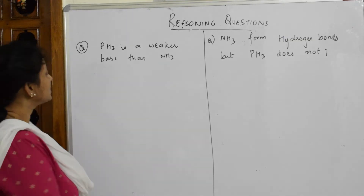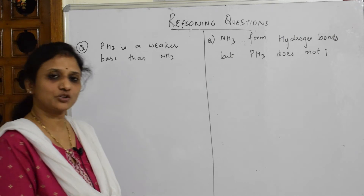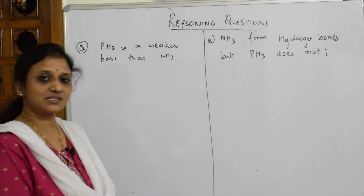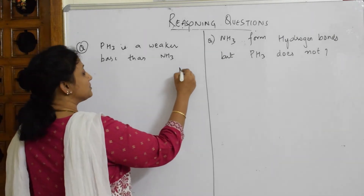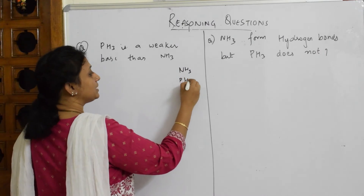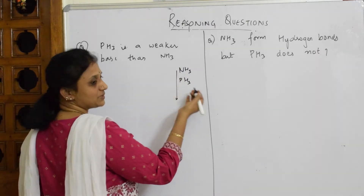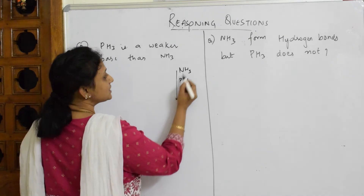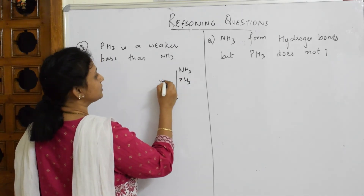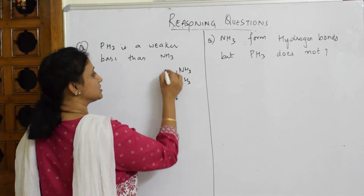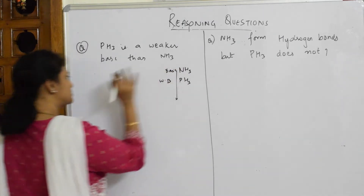Two more questions. PH₃ is a weaker base than NH₃ — it's quite common. The answer is the same concept. What is this physically? NH₃, PH₃ — as we go down the group: SbH₃, BiH₃. They said that as we go down the group, PH₃ is a weaker base compared to NH₃. This is basic; this is a weaker base. Now what happens as we go down the group?